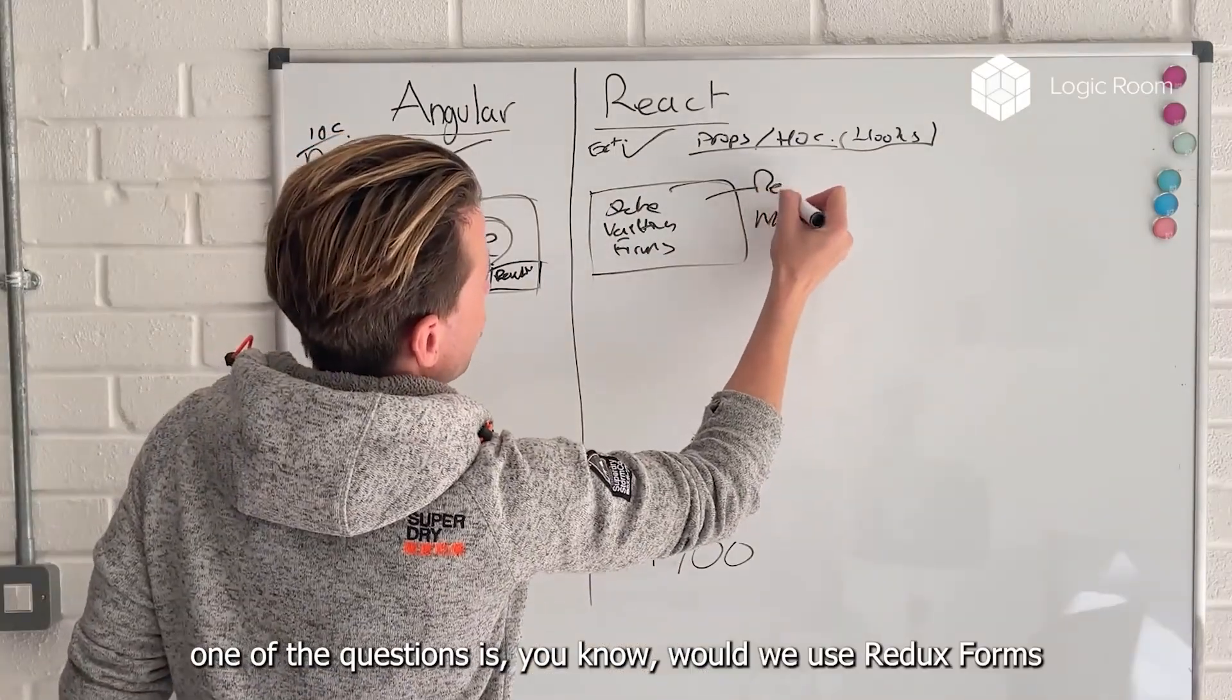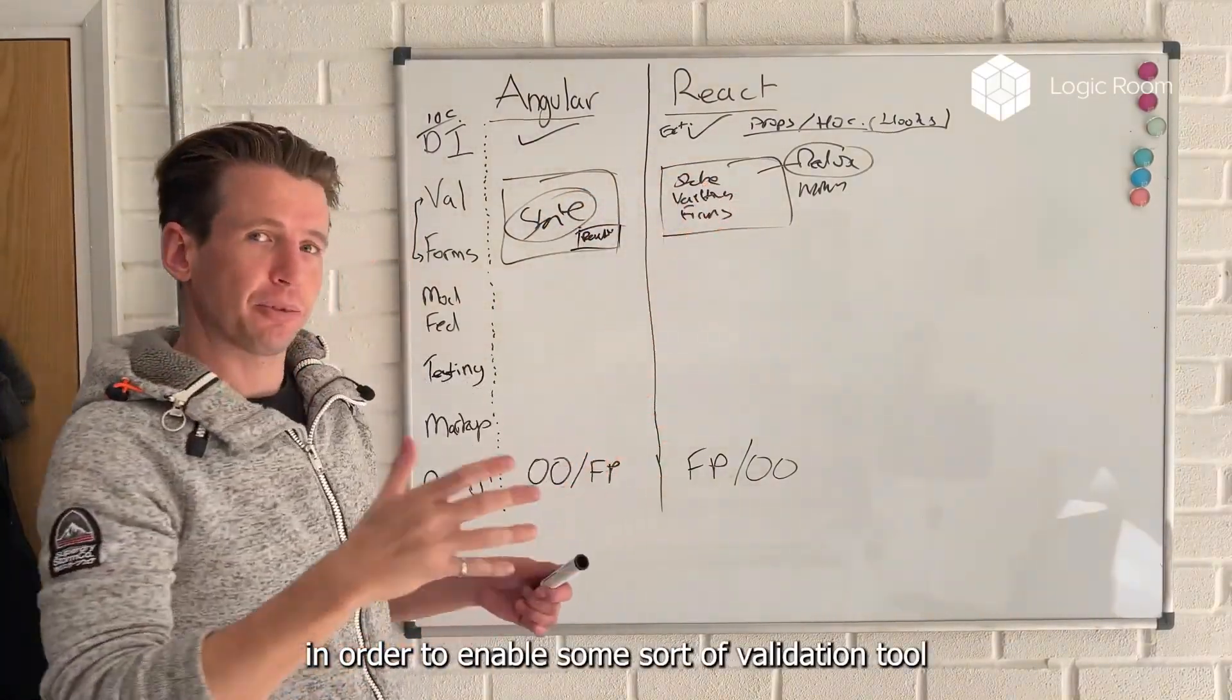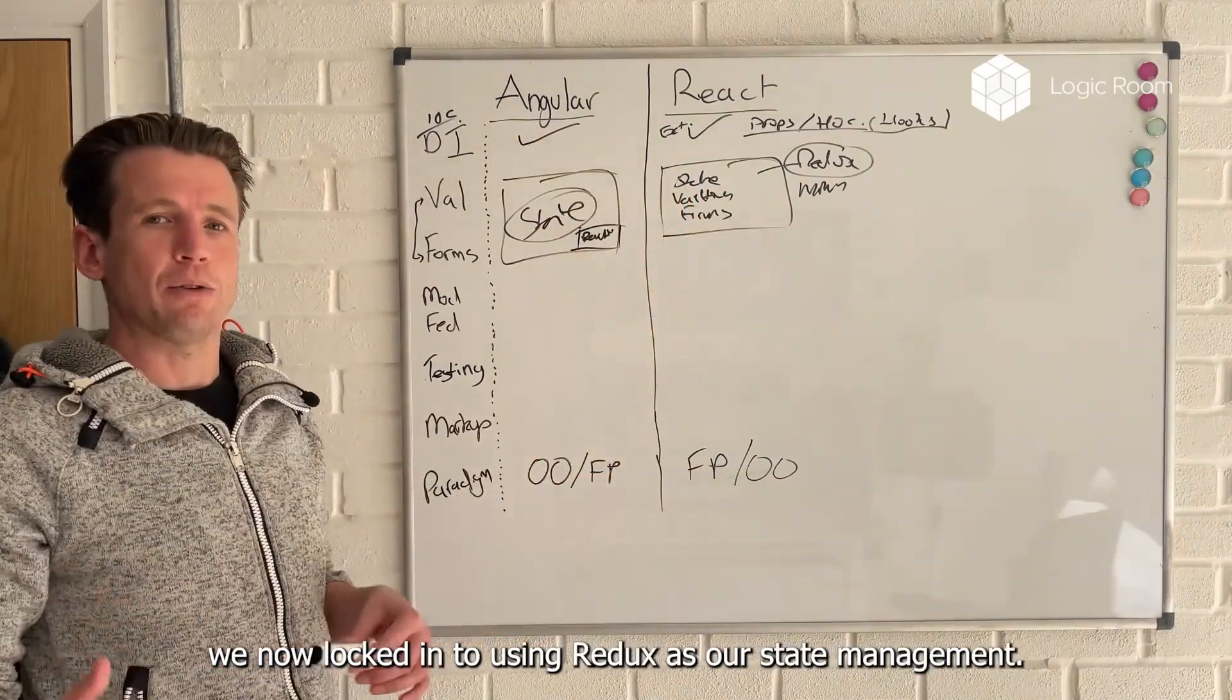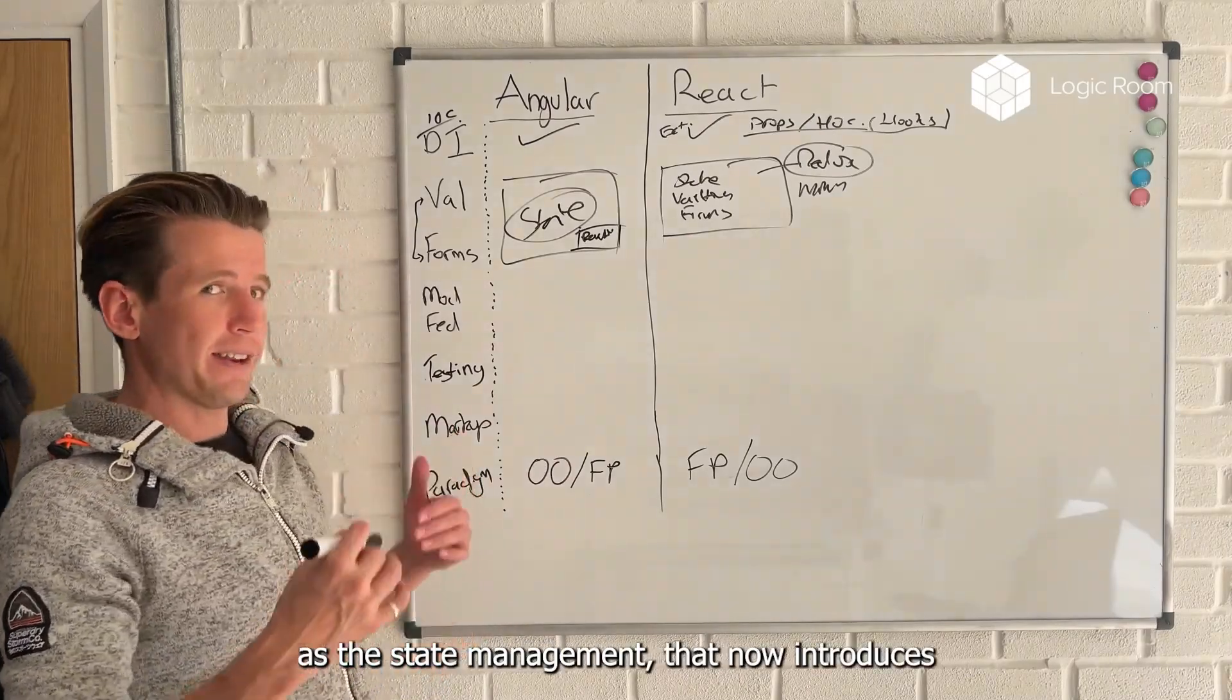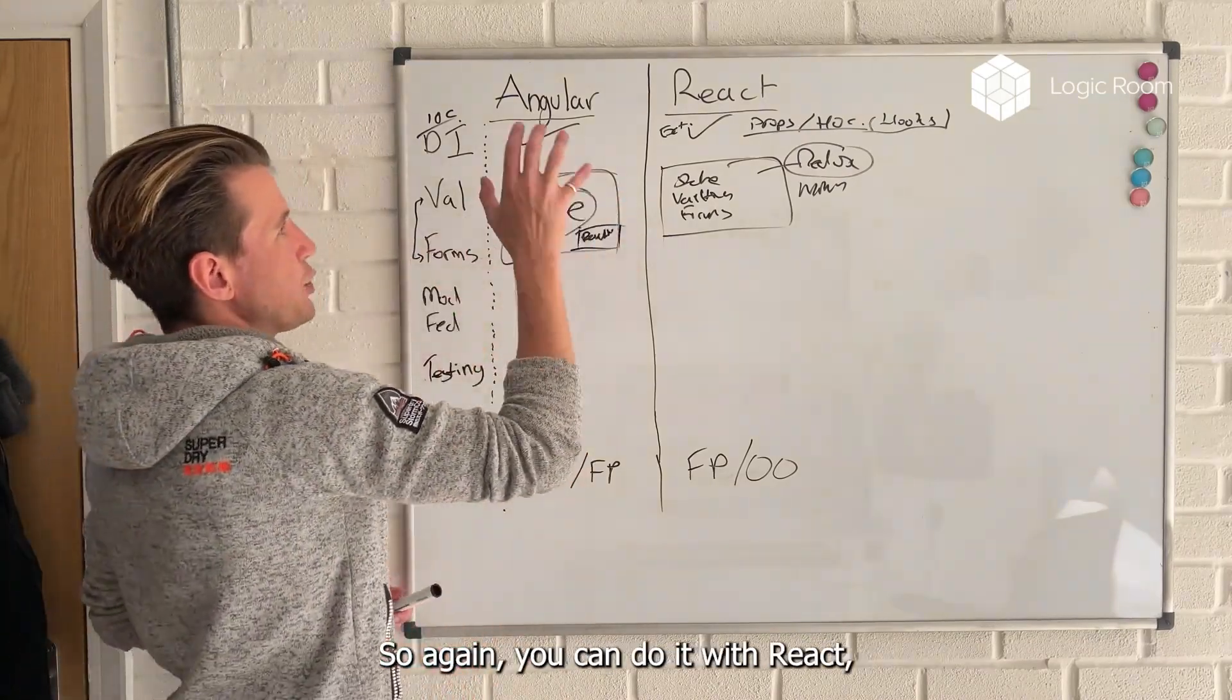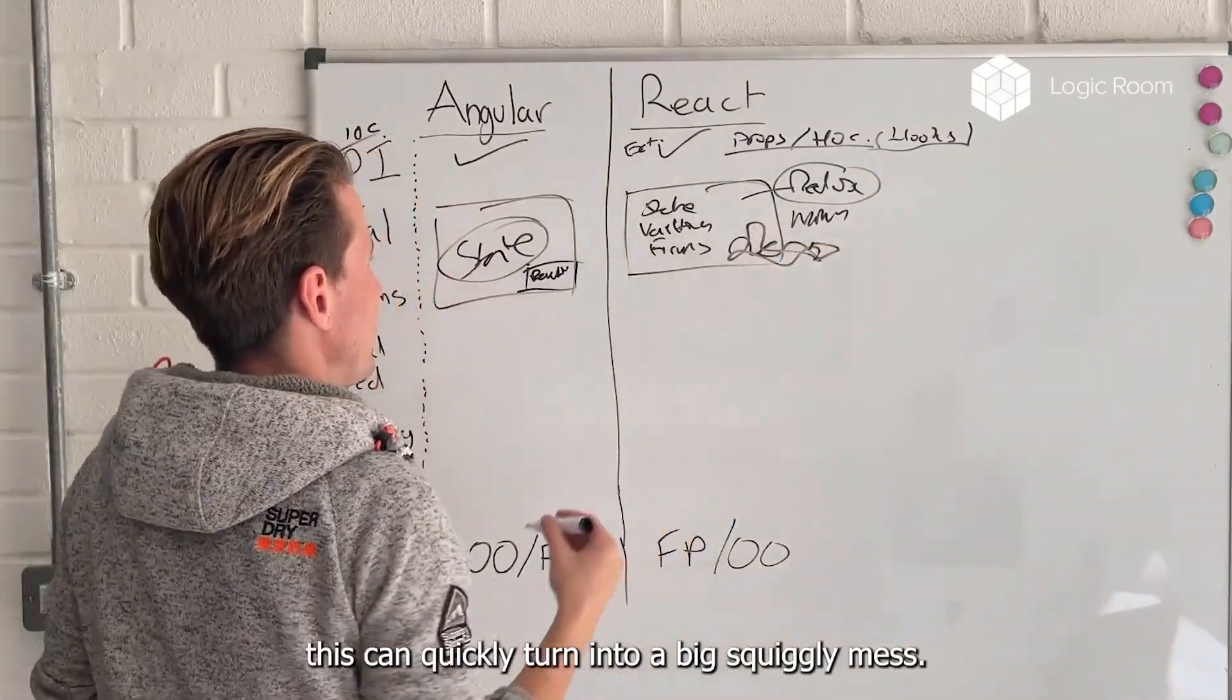For example, one of the questions is, would we use Redux forms in order to power the state mechanism to enable some sort of validation tool to run over our components? And of course, this throws up lots of questions because if we are saying that we use Redux forms, we're now locked into using Redux as our state management. And if we use Redux as our state management, that now introduces lots of other questions about how do we build our data models and how do we have enough abstraction in our system? So again, you can do it with React, but it does require a plugin to be used. And unless you are very careful, this can quickly turn into a big squiggly mess.